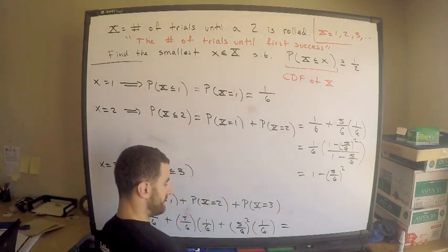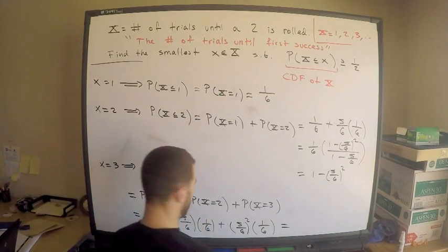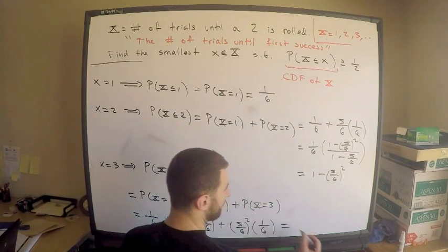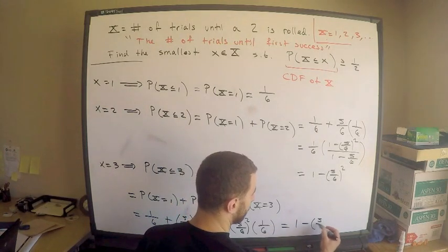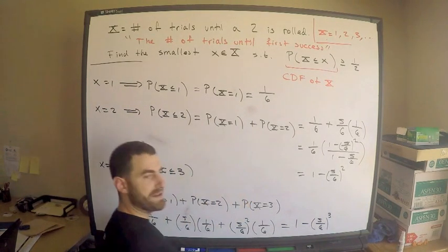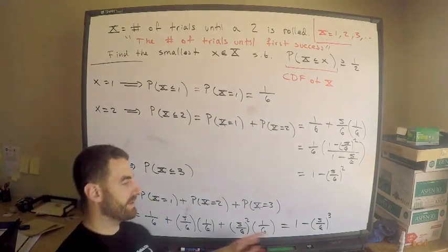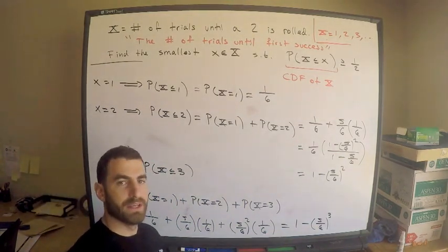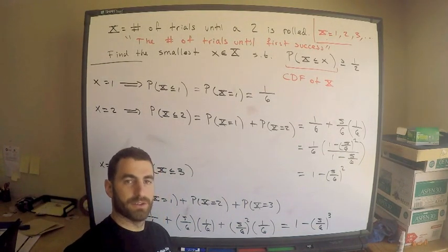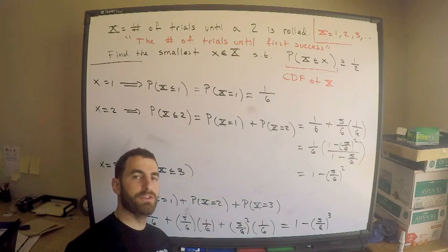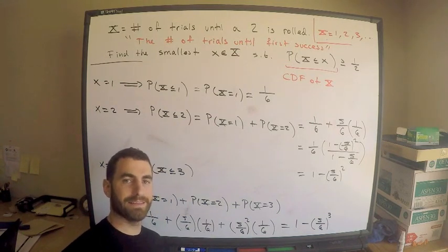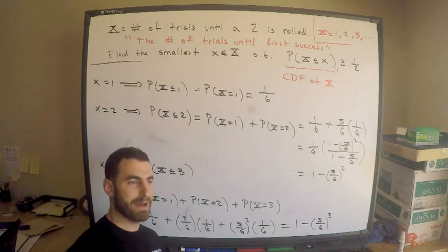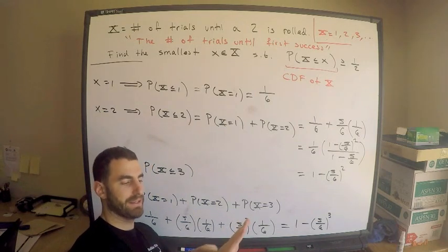Using the finite geometric series, this equals one minus five sixths cubed. I want you to understand and know the geometric sum thoroughly.